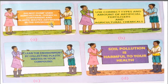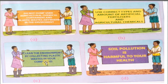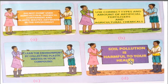This is an awareness message to farmers that they should not dump any used agricultural chemical container or plastic waste in the environment. The second poster on the right says: 'Use the correct type and amount of artificial fertilizers and agricultural chemicals,' advising farmers on the right type and amount of fertilizers and agrochemicals such as pesticides and herbicides. A third poster says: 'Clean the environment by collecting plastic wastes in your compound.' The last poster says: 'Soil pollution is harmful to your health.'